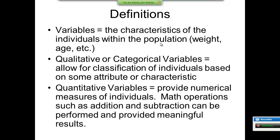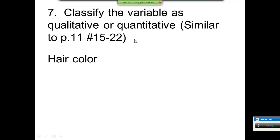The seventh example says classify the variable as qualitative or quantitative. Hair color: this is qualitative. Quantitative, again, is a number. Number of pets: this is quantitative. You have five pets, two pets, so you have a number, and it's a number that actually is a number.